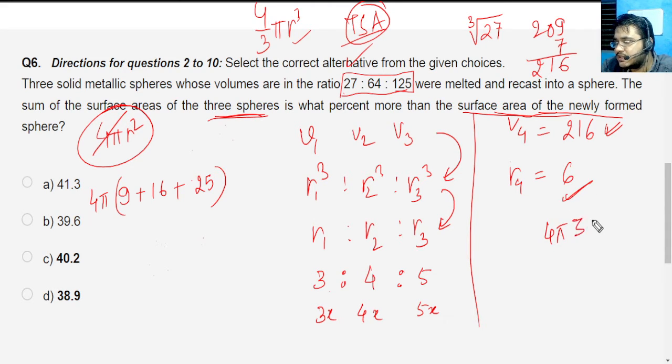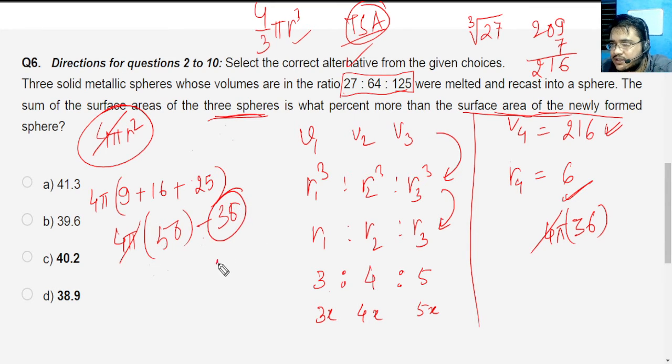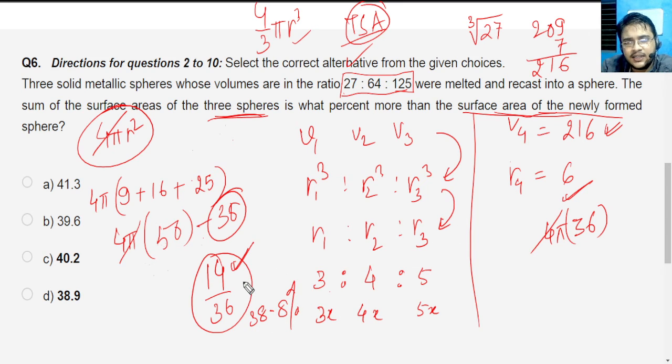Now 9 plus 16 is 25, 25 plus 25 is 50. 4π again I'm supposed to ignore because they're just constants, we'll eliminate that. The difference between 50 and 36 is 14. 14 on 36 - if you calculate 14 by 36, you'll be able to get the value. 14 by 36 is 0.38888, so 38.9%. This is going to be my answer. I hope this made sense.